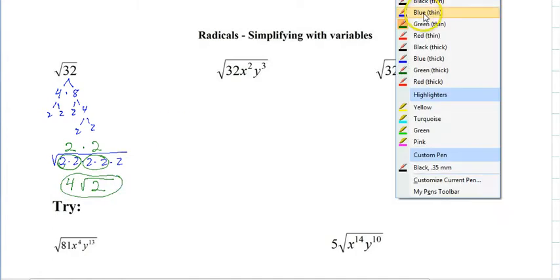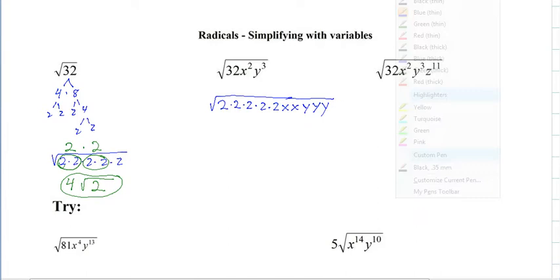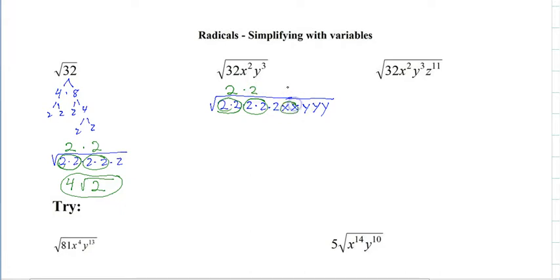With variables, it's exactly the same thing. We get 2 times 2 times 2 times 2 times 2. I'm going to do exactly the same thing with the variables. You just circle groups of 2 — pairs — and always put a multiply between them. So we also have a pair of X's and a pair of Y's. On the outside we have 2 times 2 and then XY. And what's left still in the radical is the 2 and the Y.